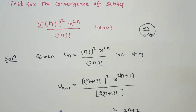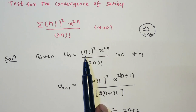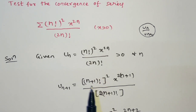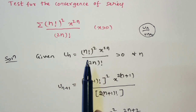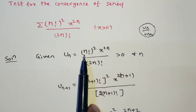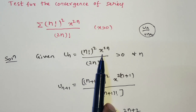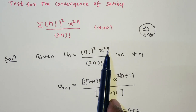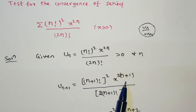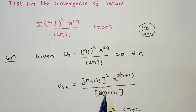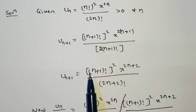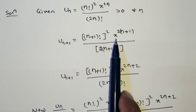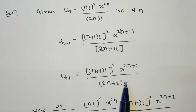For u_{n+1}, in place of n I have to substitute n+1. This is not a repeated series form, so directly put n equal to n+1. So u_{n+1} becomes (n+1) factorial whole square times x to the power of 2(n+1), divided by 2(n+1) factorial. Splitting this, it becomes (n+1) factorial whole square times x to the power of 2n+2, divided by 2n+2 factorial.